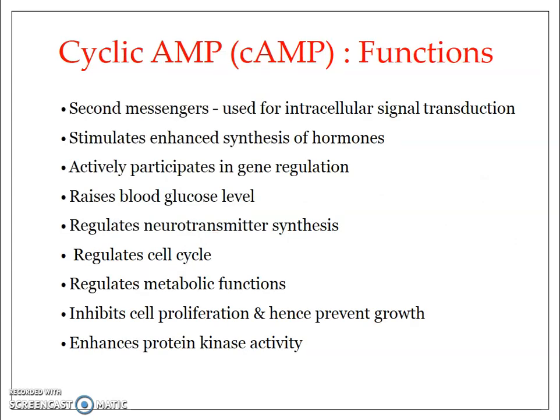Cyclic AMP plays a very important role as a secondary messenger. Primary messengers like hormones and neurotransmitters bind to receptors on the plasma membrane; this triggers a series of actions that activate adenylyl cyclase, which converts ATP into cyclic AMP. Cyclic AMP then transduces the signal passed from the hormone. It also increases the permeability of the plasma membrane, promotes synthesis and activation of certain enzymes, and enhances protein kinase activity — protein kinases phosphorylate specific proteins.